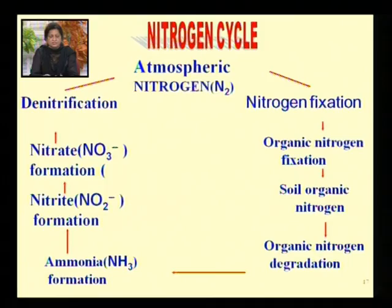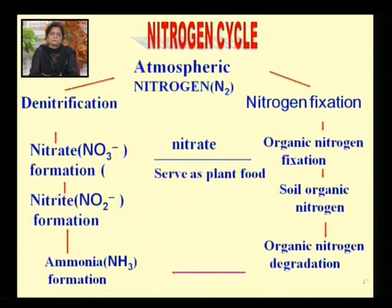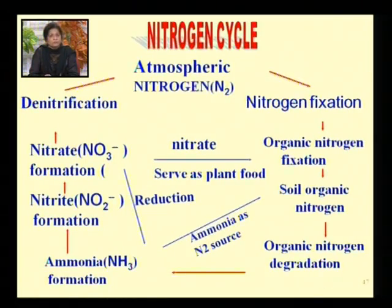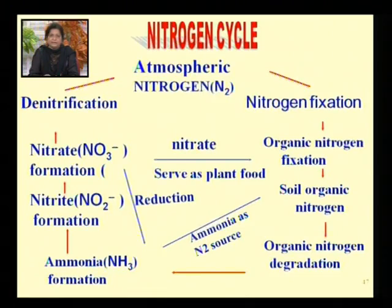Certain plants can also utilize NO3 as a nitrogen source. The reduction process in which NO3 is the final electron acceptor has two options: it can generate N2 or generate ammonia. If ammonia is regenerated, it can be easily taken up by soil organisms or plants. This is how the nitrogen cycle is interwoven and interlinked.